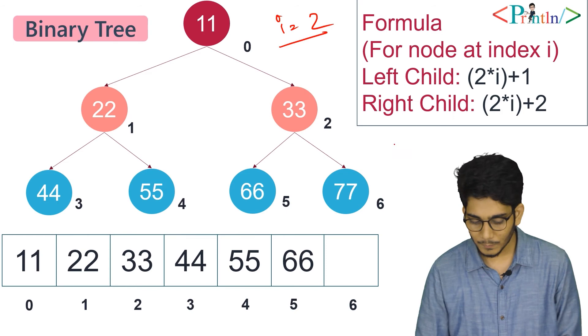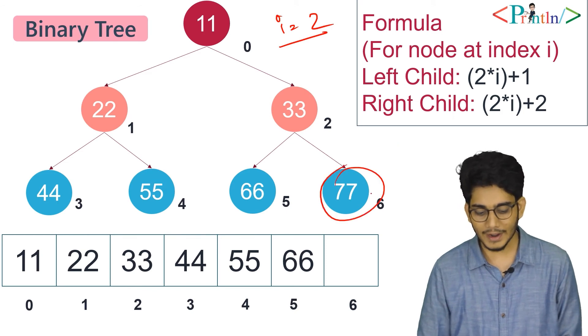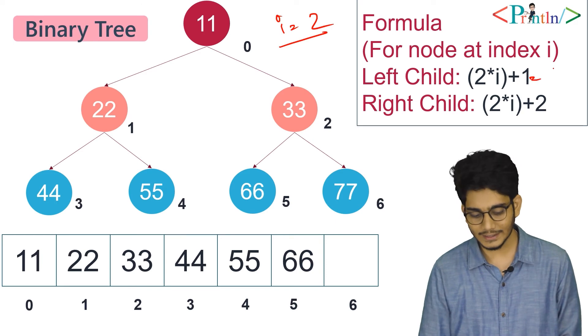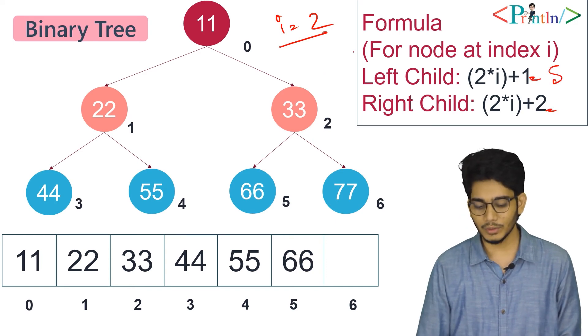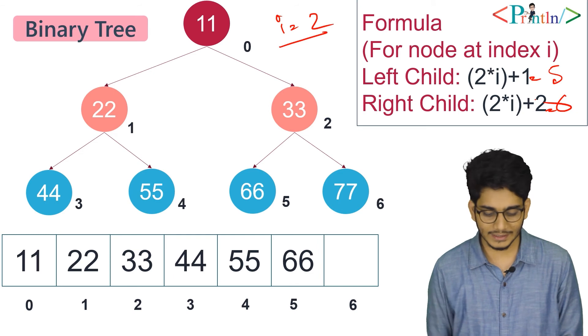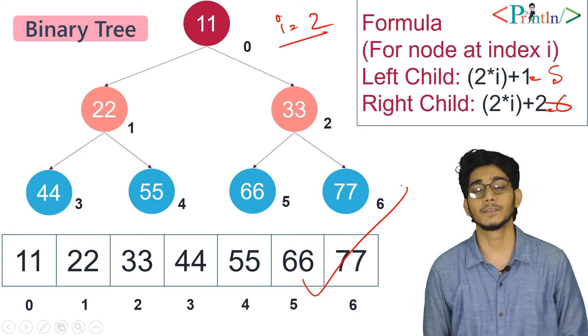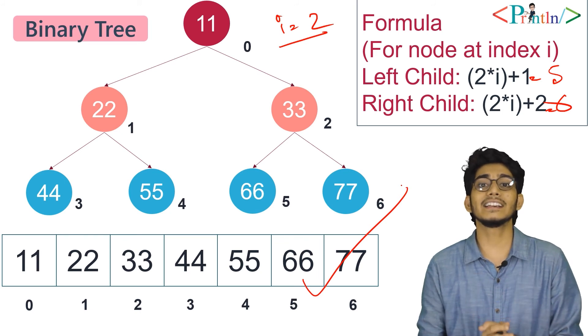Now we'll see where we'll insert 77. We'll insert 77 at 2*2 = 4, plus 2 = 6, so we'll insert 77 at index 6. This is how we can insert any element in a binary tree which is implemented using an array.